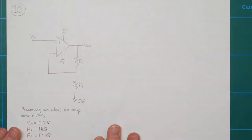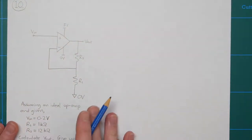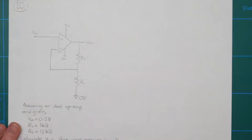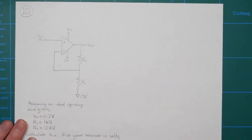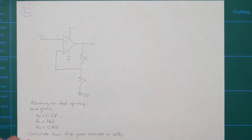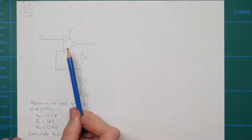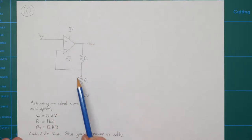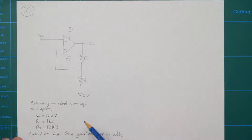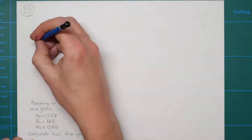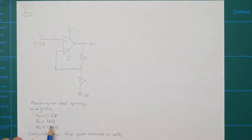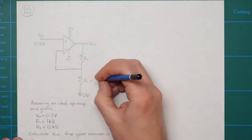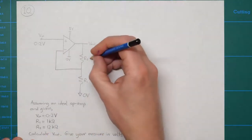Question 10 is another op-amp question. This time the op-amp is wired as a non-inverting amplifier, which is one of the two classic amplifier configurations. The gain is determined by the ratio of resistors R1 and R2. We know the input voltage is 0.2 volts, R1 is 1 kilohm, and R2 is 12 kilohms.